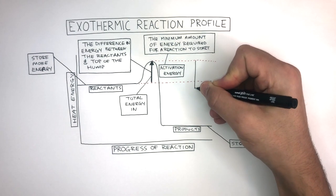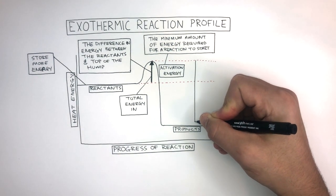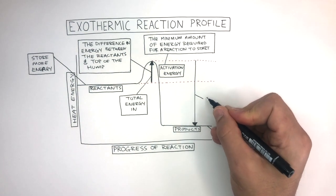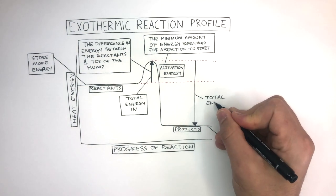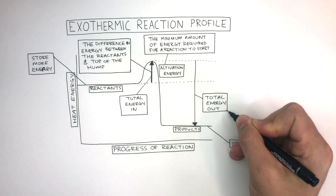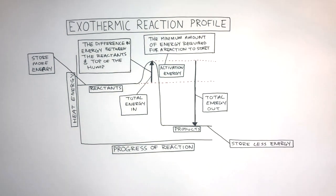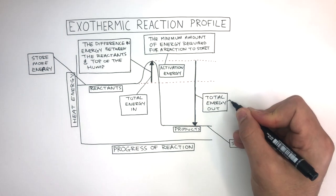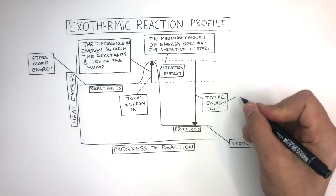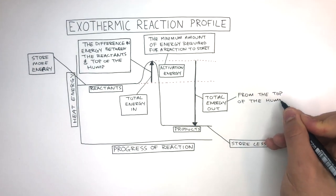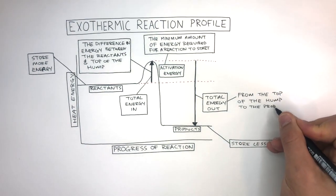From the top of the hump down to the products is the total energy out. This represents how much energy was released when the new bonds were being made in the products, and is measured from the top of the hump to the products.